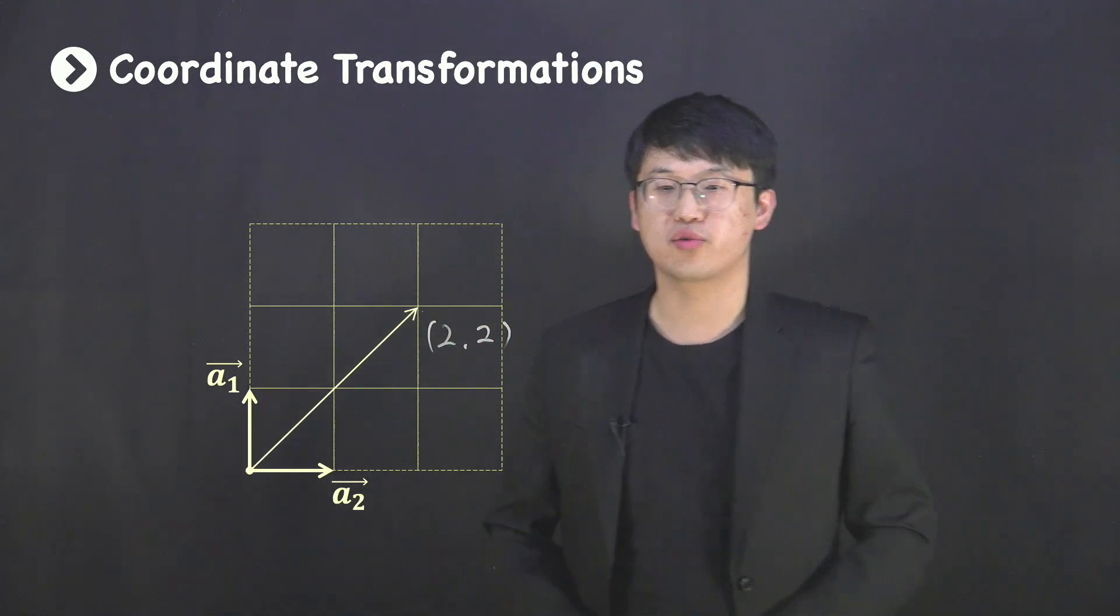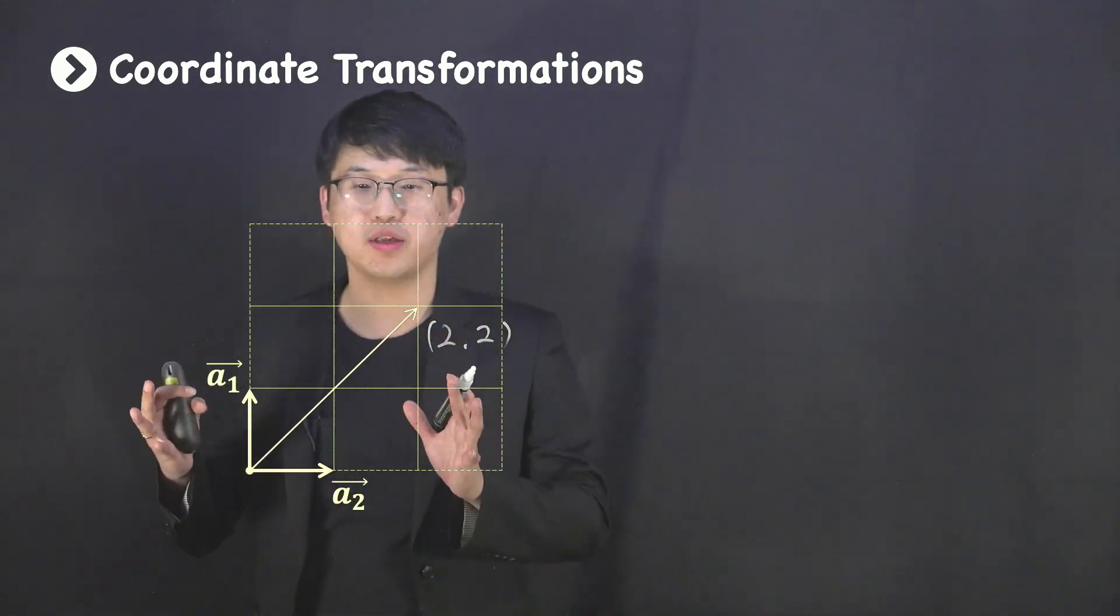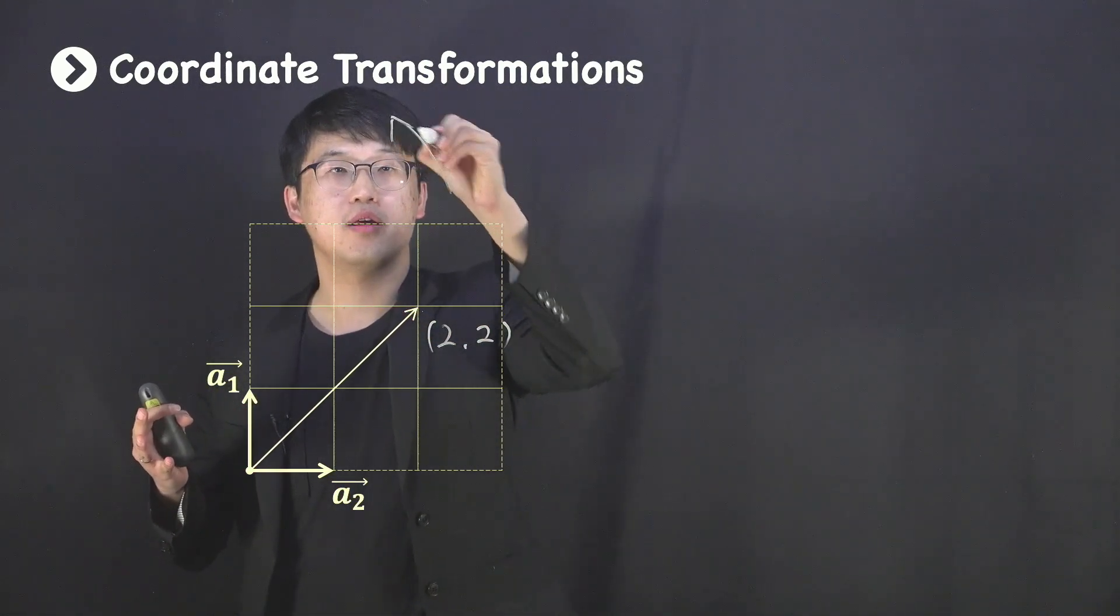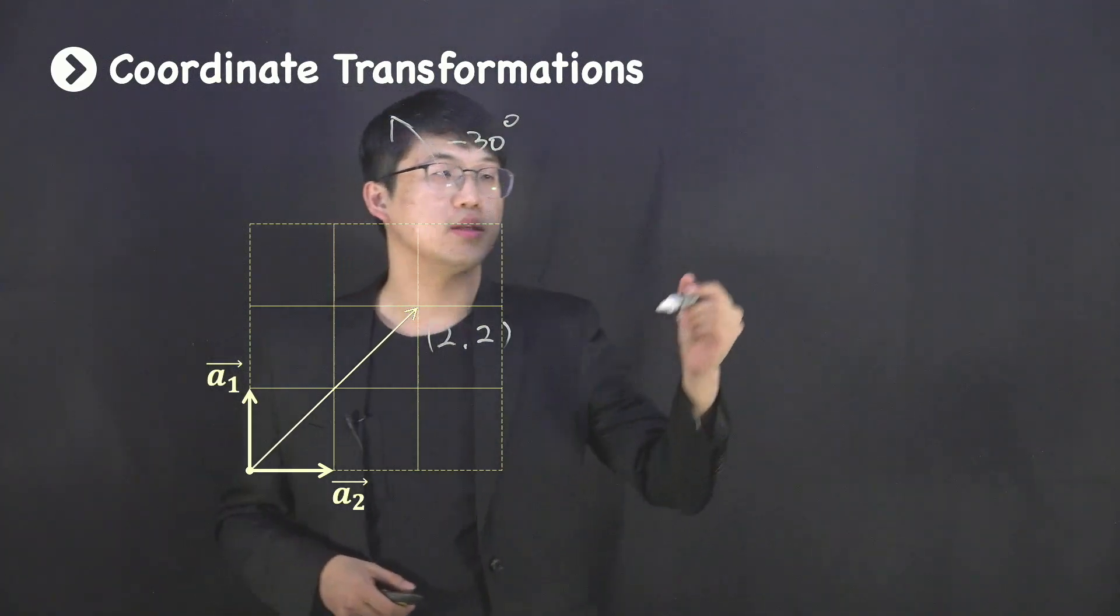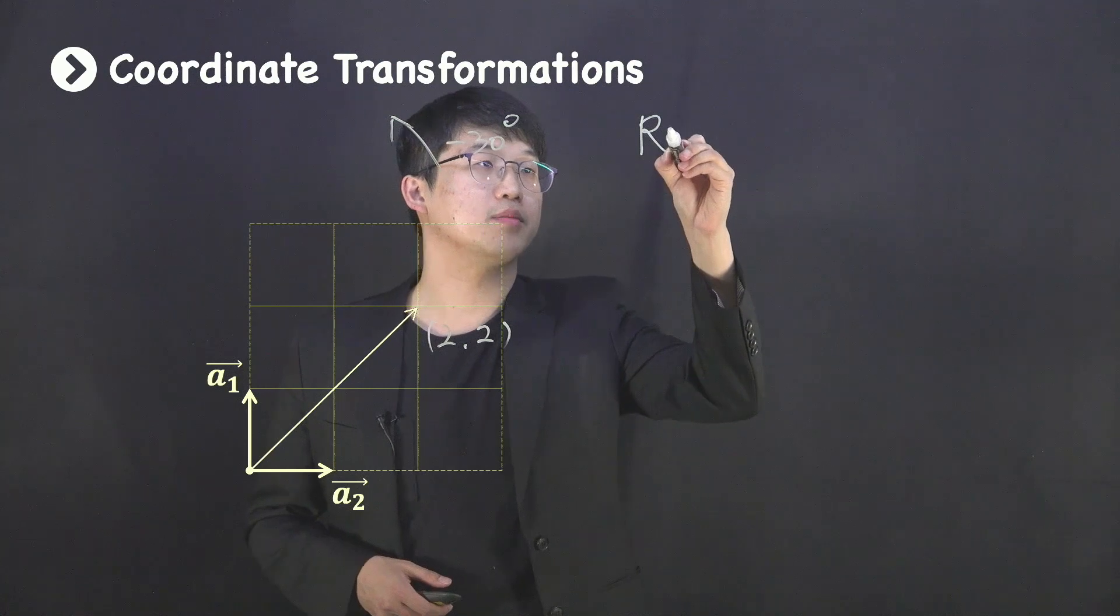Now, rotating this coordinate frame with negative 30 degrees involves this matrix multiplication.